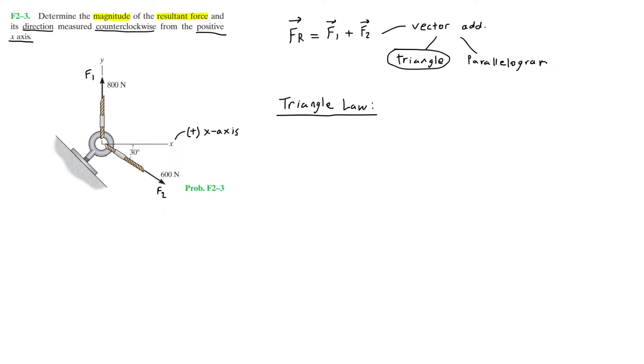Using the triangle law, we're going to start off with our force F1. We're going to add F2 onto it starting from the head of F1, and then draw FR from the tail of F1 to the head of F2, completing the triangle and throwing in the angles that are given.